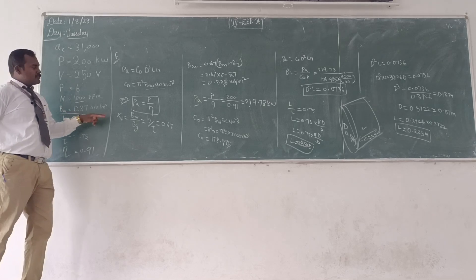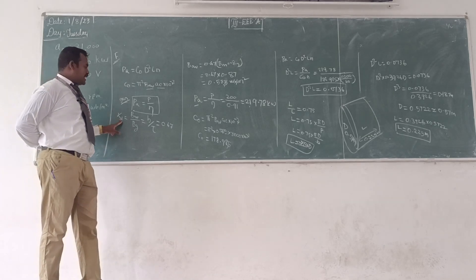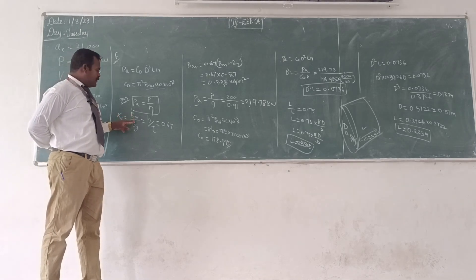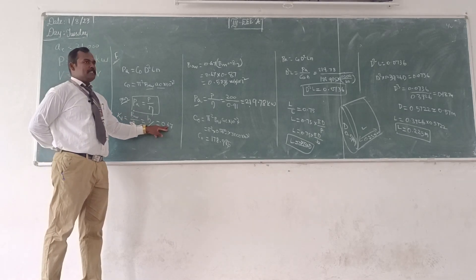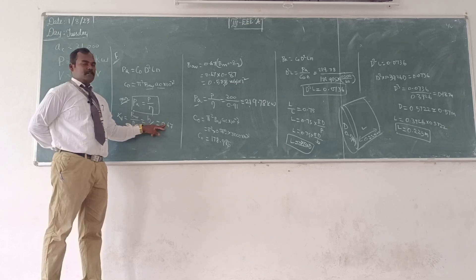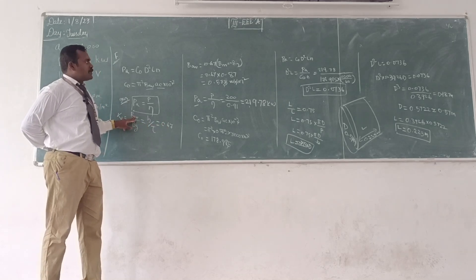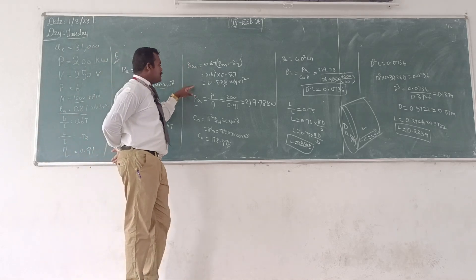We can calculate BAV by using the form factor formula. The form factor Kf should be equal to BAV divided by Bmax, which equals the pole arc to pole pitch ratio of 0.67. From that we can calculate the BAV value.